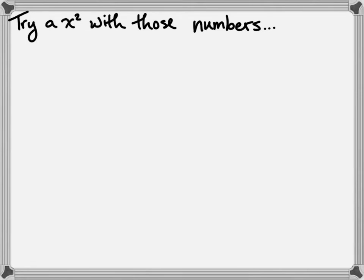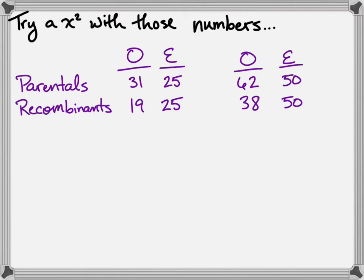Let's try a chi-square with those numbers. We have our parentals and our recombinants for our two experiments, one with a total of 50. The expected values are 25 and 25 because you would expect parental and recombinant phenotypes to be half and half if it's a 1:1:1:1 ratio. And for the other, we have 50 expected for each. So my question to you is, what are the degrees of freedom that you would use for this chi-square problem? You can use that to calculate your critical value of your chi-square and what chi-square values do you get for these two experiments. Go ahead and pause.